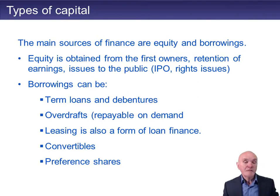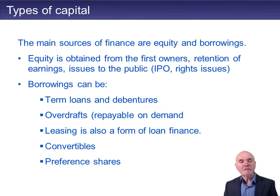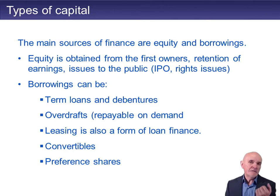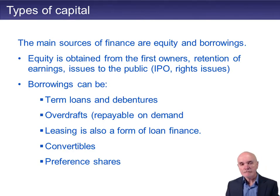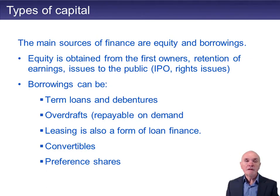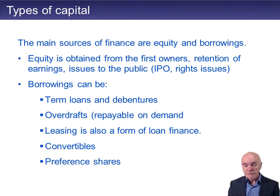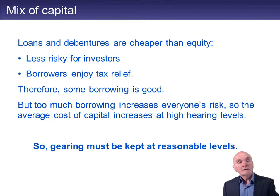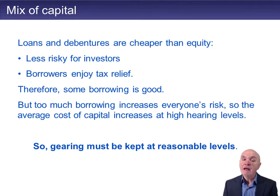Then you have preference shares, usually treated as more of a form of borrowing. More or less, the preference dividends are going to be paid, but there's no real possibility of gain or loss. For simplification, we tend to divide the argument into equity capital — risk capital — and some form of loans. Loans and debentures are going to be cheaper than equity.